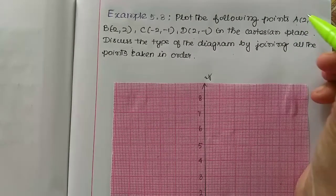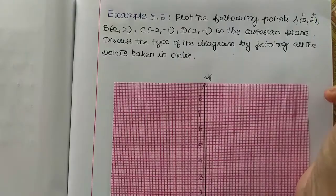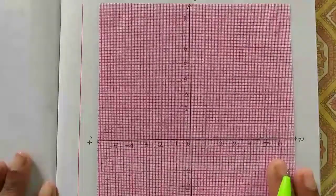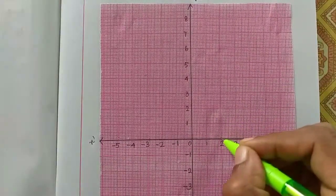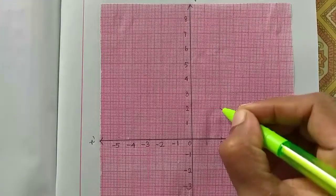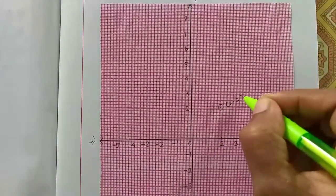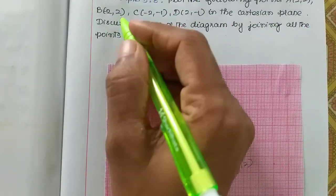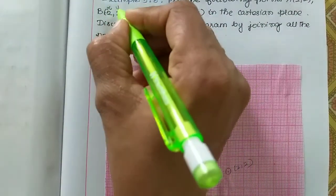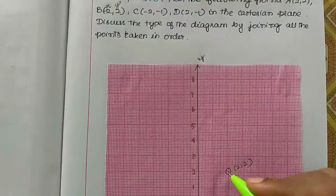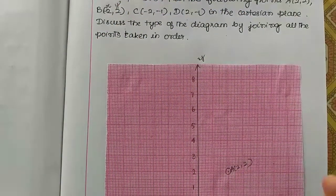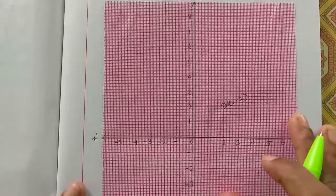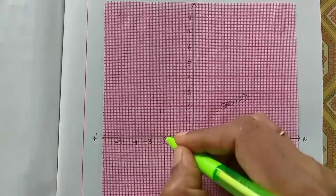A is 2,2. Both numbers are plus, so first quadrant. X is 2 and y is 2, so 2,2. Next B is minus 2, 2. X-axis is minus 2 and y-axis is 2. This is minus 2, so B is minus 2, 2.